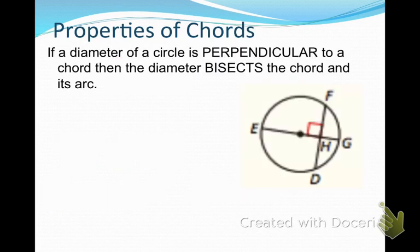Another property is: if a diameter — and remember a diameter is a chord — if a diameter of a circle is perpendicular to another chord in the circle, then the diameter bisects the chord, which means cuts it into two equal pieces. It also bisects the arc, which means cuts it into two equal arcs.